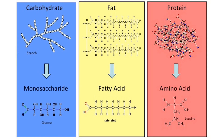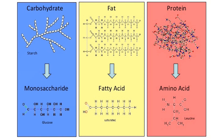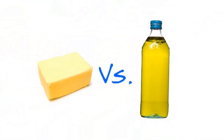A little bit of background first. Fat is one of the three main macronutrients, along with protein and carbohydrate. We require a certain amount of fat for metabolism and structure, in addition to its use as a source of energy. Fat usually refers to lipids that are solid at room temperature, while oil refers to liquid lipids, but for simplicity I will use these terms interchangeably.